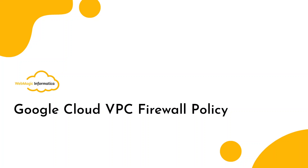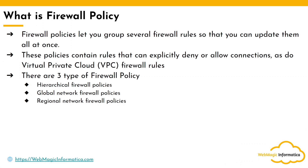In this video we are talking about Google Cloud VPC firewall policy. Before jumping into firewall policy, let's first talk about Google Cloud firewall rules. Google Cloud firewall rules allow you to allow or deny traffic based on the port number you specify, and these rules are created on every VPC. So if you have 10 VPCs, you would need to create 10 rules in 10 different VPCs — they might be the same rule, but you would need to do the same process 10 times.